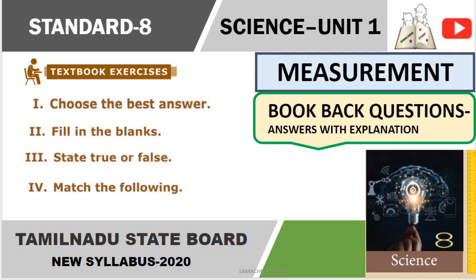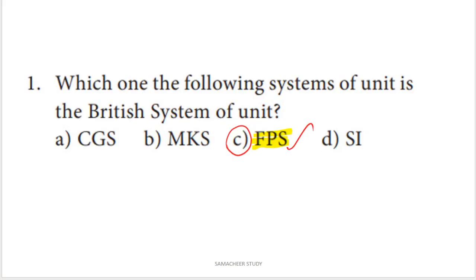Students, let's look at the choose the best answer section. First question: which one of the following system of units is the British system of unit? The options are CGS, MKS, and FPS. Note that FPS is the British system of units.